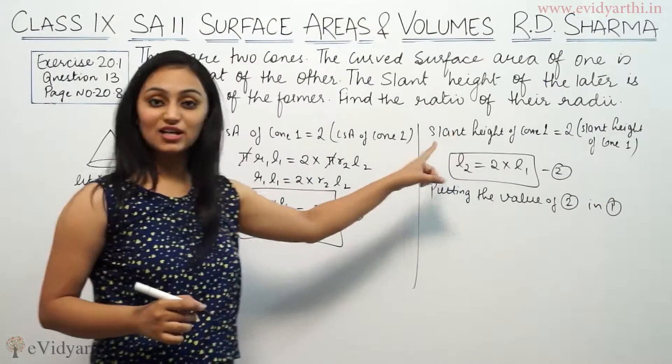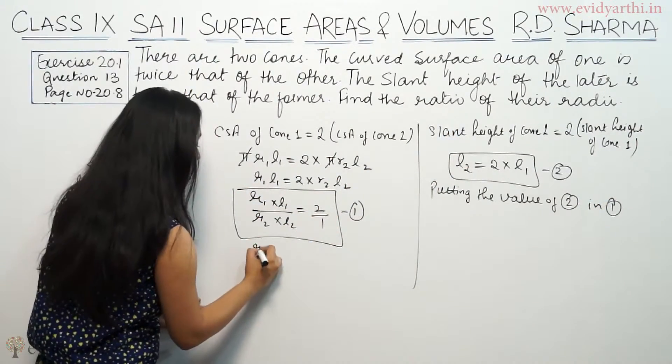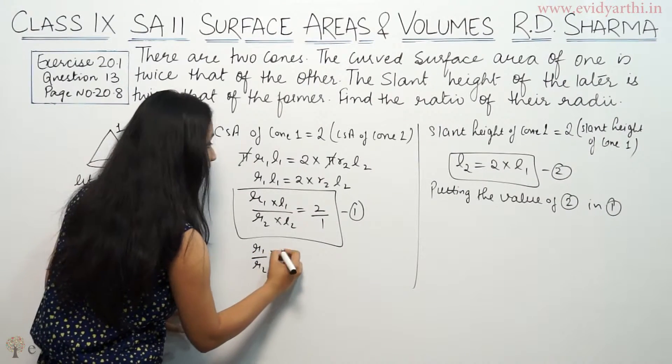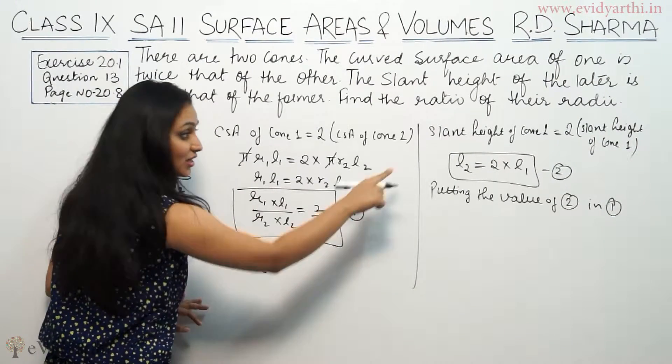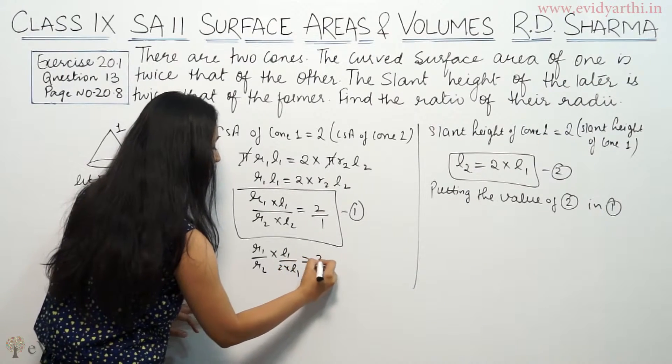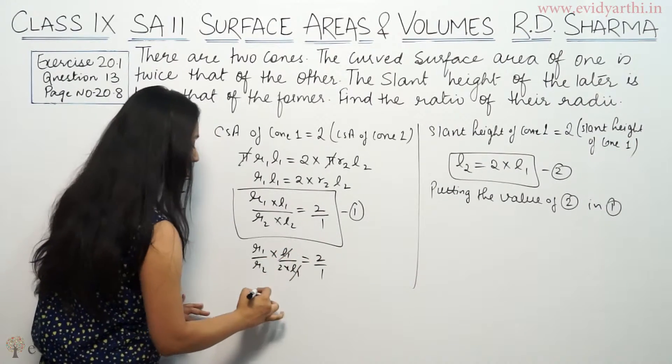So we have the ratio. So r1 by r2 into L1, L2 ki value put 2 into L1 equals 2 by 1. So L1 se L1 cancel.